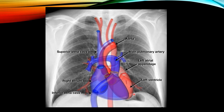On the left side is the left ventricle, then there is a small concavity formed by the left atrial appendage, then the main pulmonary artery, then the aortic arch. Any abnormality — for example, left atrial appendage or left atrial enlargement — will cause straightening of the left heart border, because the concavity is lost when left atrial enlargement occurs.